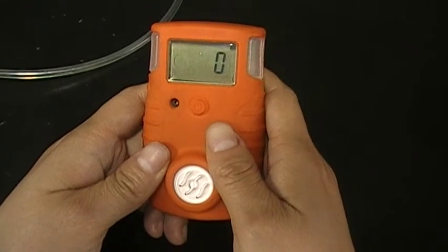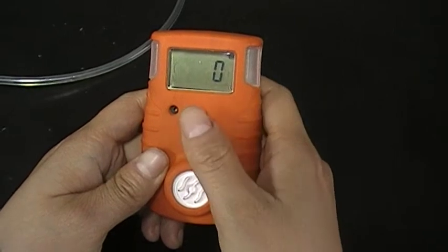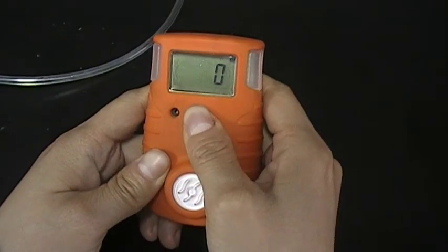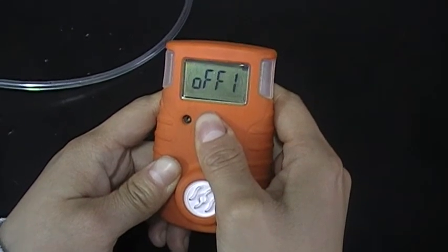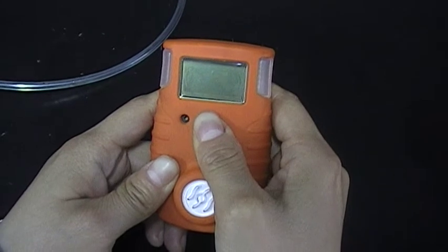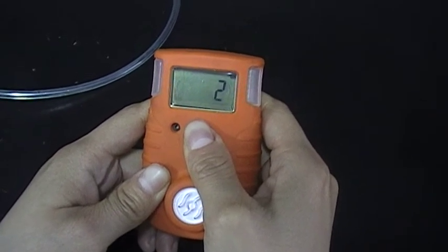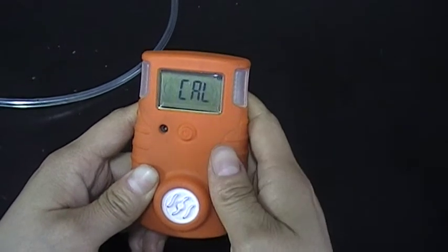Now we will introduce how to calibrate BX171. Press this button when the unit is turned on. Keep holding the button even when the device is turned off. Release the button when the display shows CEL.